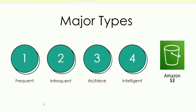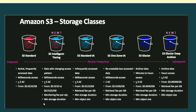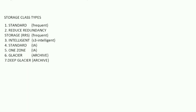In the four categories, there are 7 storage classes: Standard, Intelligent-Tiering, Standard IA (Infrequent Access), One Zone, Glacier, and Deep Glacier. These fall under the Frequent, Infrequent, Intelligent, and Archive categories.